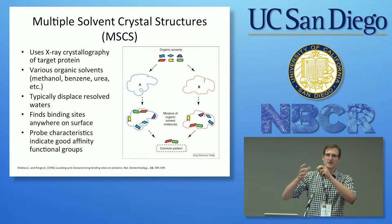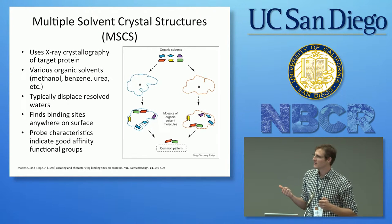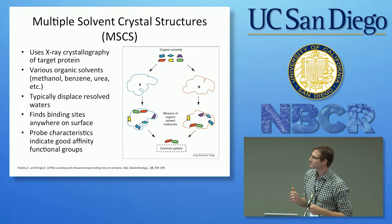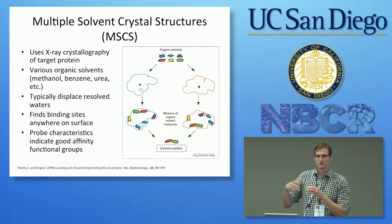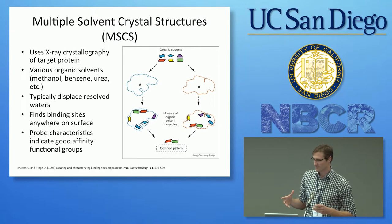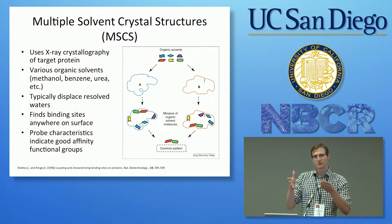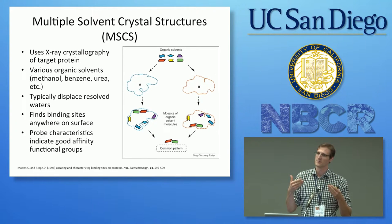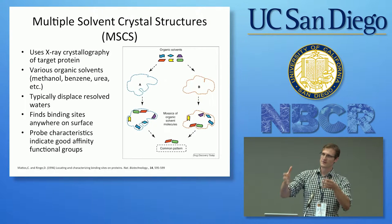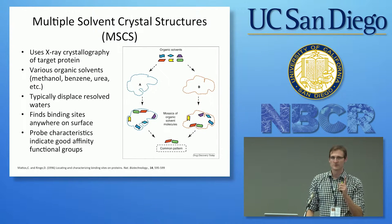It samples all these different conformations using a simplified potential energy function and evaluates many different conformations of these small molecules. There are 16 different probe types. The key point is it analyzes one single crystal structure. You pull a crystal structure from the PDB, put it into the program, and it returns your crystal structure with probes docked into various locations based on the algorithm.